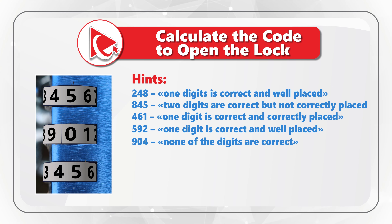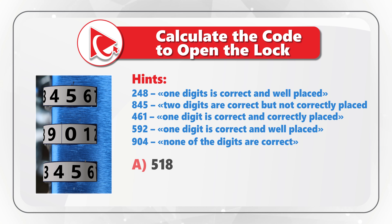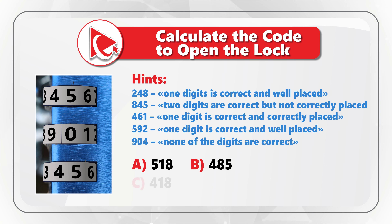To open the lock, you need to process all the hints and select one out of four possible choices. Choice A: 518. Choice B: 485. Choice C: 418. And last but not least, choice D: 568.